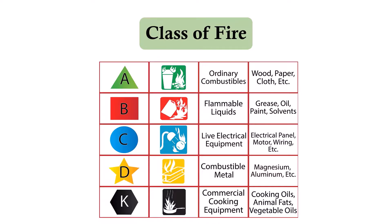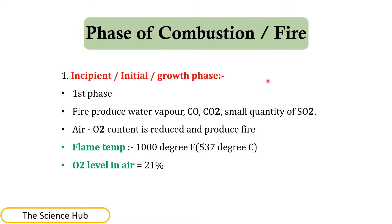The phases of combustion begin with the initial phase, also called the incipient or growth phase. Here the fire produces water vapor, carbon monoxide, carbon dioxide, and a small quantity of SO2. Air oxygen content is reduced as fire is produced. The flame temperature is approximately 1,000°F (537°C), and the O2 level in air is 21%.